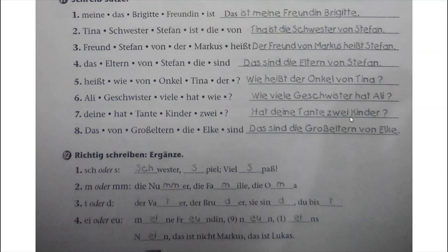Then number 12: Richtig schreiben - we have to choose the correct spelling to complete the word. Number 1: Sch oder S. We have to write down where we use 'Sch'. First one is Schwester - Sch. Next is Spiel - only S. Then sparse - only S.